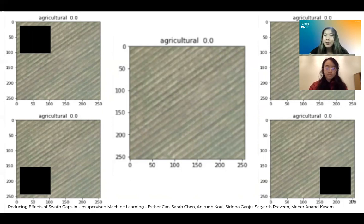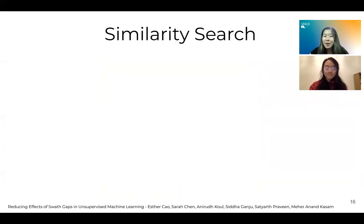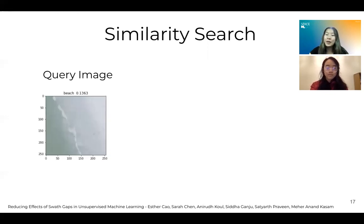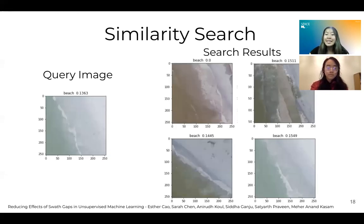We modeled the swath gap problem through the use of a similarity search that takes an input query image and returns its most similar images from the dataset using an autoencoder. For more information on autoencoders or similarity searches, we'd be happy to answer questions at our live session or through our paper. We began our similarity searches with a baseline test on an original beach query image, and the similarity search performed with high accuracy, returning four images of real beaches.